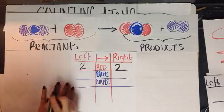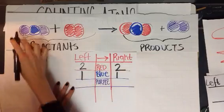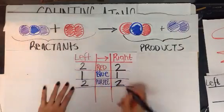How many blue do you see on the left-hand side? One atom. How many blue on the right hand? One. How many purple? Two atoms. How many purple? Two atoms.